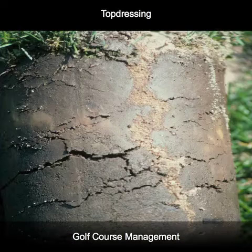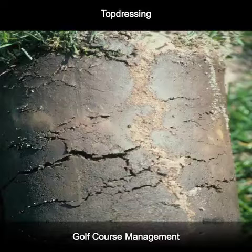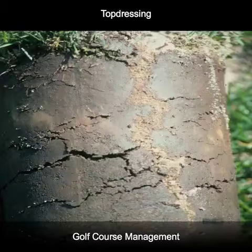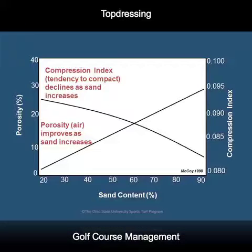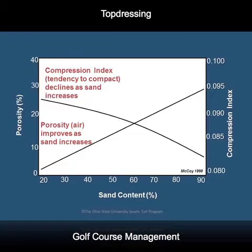The second role that top dressing plays in turf management is to reduce the bulk density of the native or push-up greens or fairways. This picture shows a soil profile that has been deep tined and then had sand added to it to reduce compaction and to open up drainage channels through the soil. As we can see from this chart, sand increases the amount of air spaces in the soil and also reduces the tendency for that soil to become compacted.